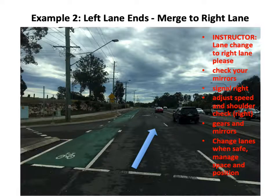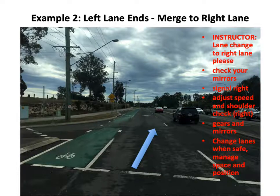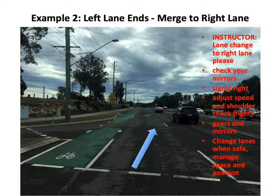Example two: left lane ends, merge to right lane. The instructor would advise the driver to make a lane change to the right lane — check your mirrors, signal right, adjust speed and shoulder check to the right, change gears if required, pop a mirror check, and move over in a smooth and safe manner into the right lane. There's plenty of time to get over; there's a warning sign saying left lane ends, there's also a bike lane, and a left lane coming from the side. So there's plenty of observation and scanning required for that example.